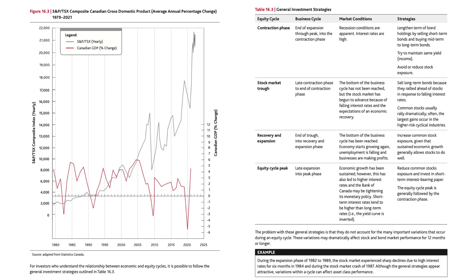The contraction phase of the equity cycle corresponds to the end of expansion through peak into the contraction phase of the business cycle. Recession conditions are apparent and interest rates are high. The strategy for this phase: lengthen the term of bond holdings by selling short-term bonds and buying mid-term to long-term bonds; try to maintain the same yield or income; and avoid or reduce stock exposure.